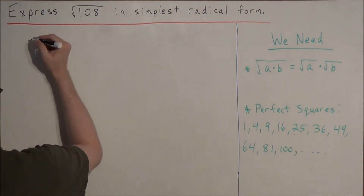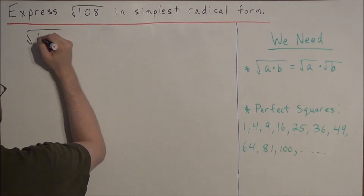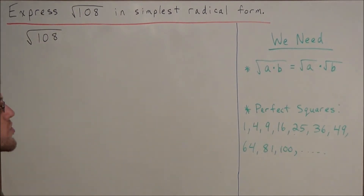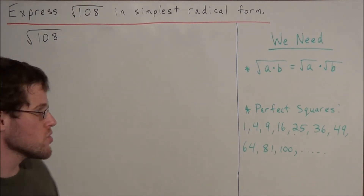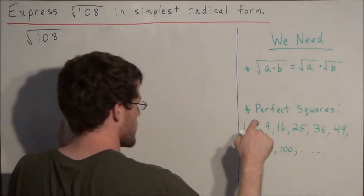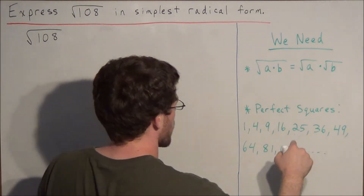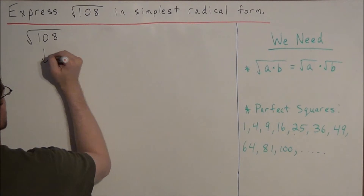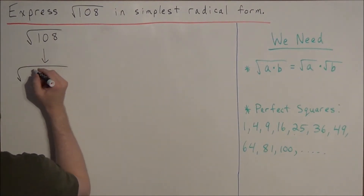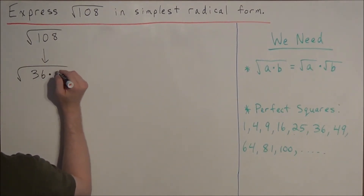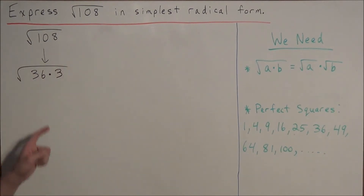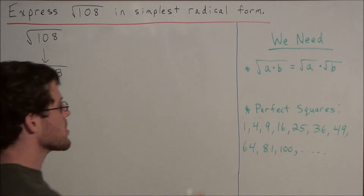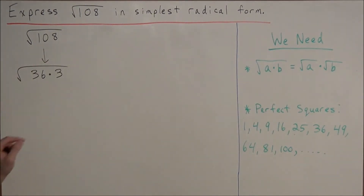So we're looking at the square root of 108, and what we need to do is find a perfect square factor of 108. Let's say we knew that the greatest perfect square factor of 108 was 36. That would allow us to break this expression down into the square root of 36 times 3. You can check this: 36 times 3 is 108. This allows us to use the property to break this apart into two radicals.